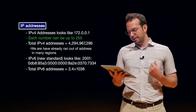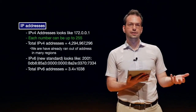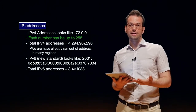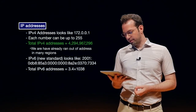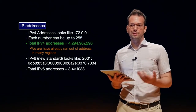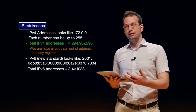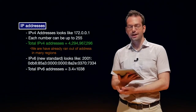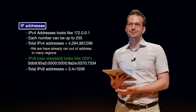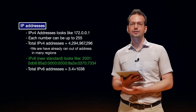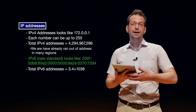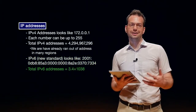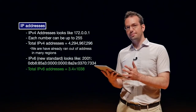IP version 4 is a quite old standard and we're actually running out of IP addresses. We only have about 4 billion IPv4 addresses but more than 4 billion devices in the world. So we developed IP version 6, a new standard that some countries have already switched to. IPv6 provides vastly more address space plus additional security and advanced features that IPv4 doesn't have.